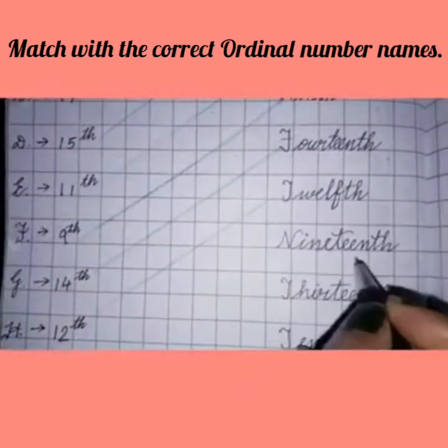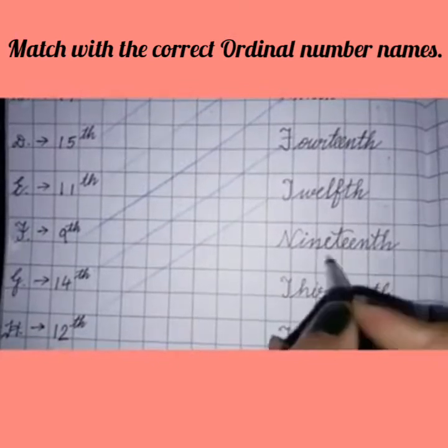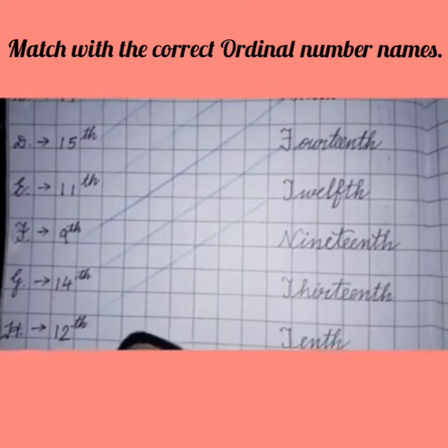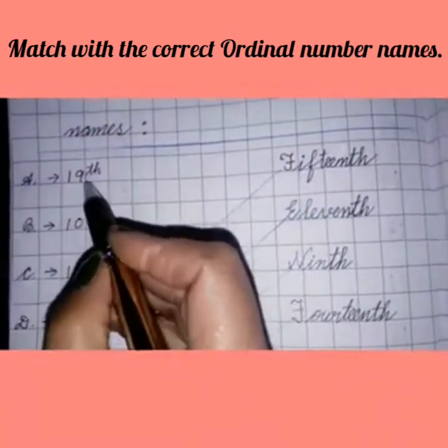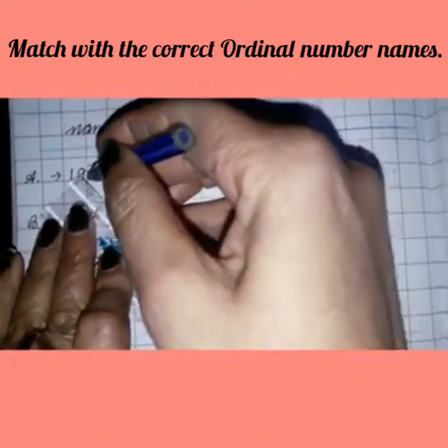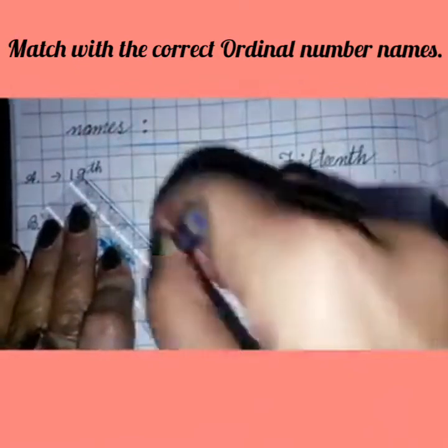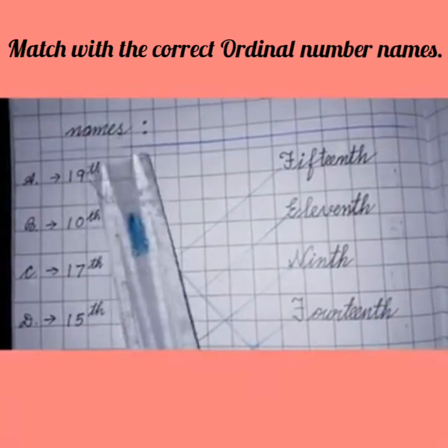Now write the next ordinal number name. N-I-N-E-T-E-E-N-T-H 19th. So where is 19th in this row? Yes. This is 19th. Now we will match this like this. Children, you will use blue marker pencil and a ruler for matching.